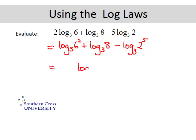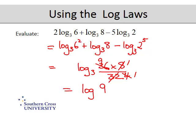So it becomes log base 3 of 36 times 8 divided by 2 to the power of 5, which is 32. Now simplifying that down, 8 goes into 8 once and into 32 four times, and then 4 goes into 4 once and 4 nines at 36. So that ends up as the log of 9 base 3 and that's 2.